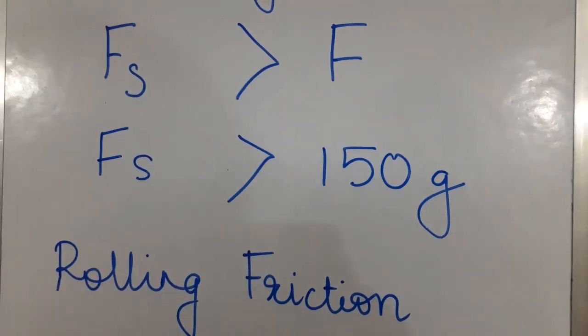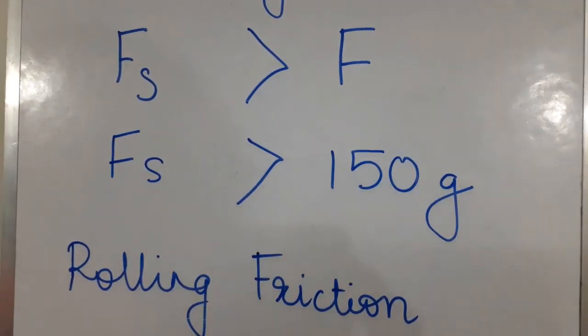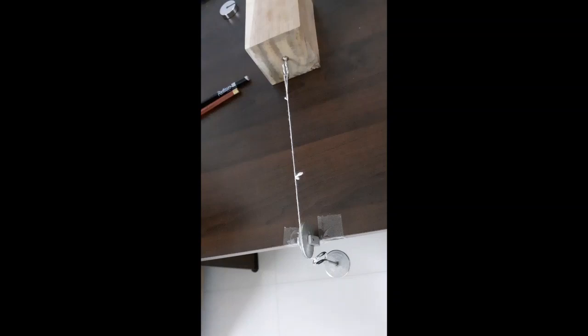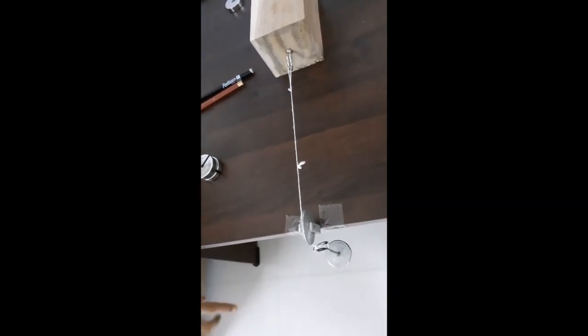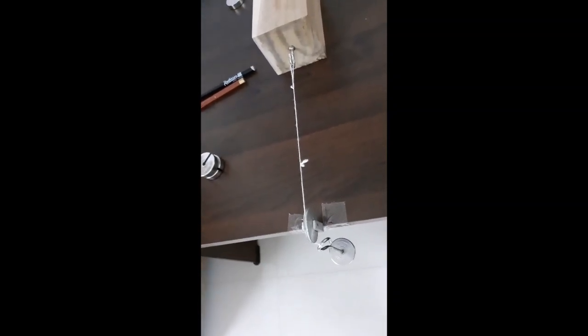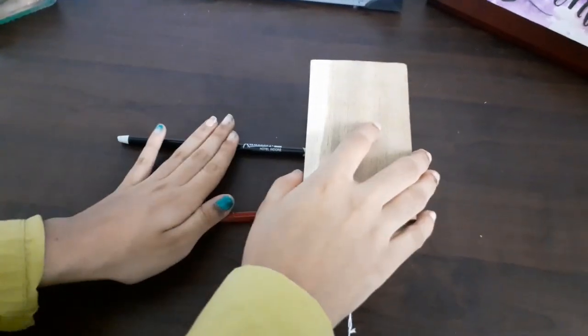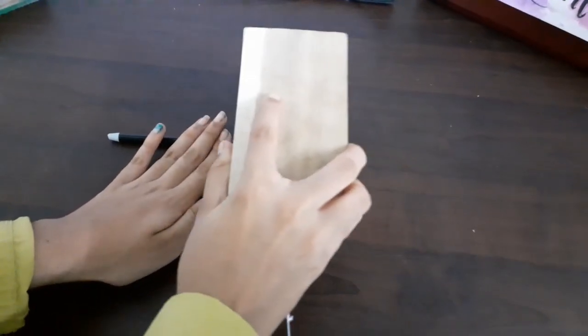Let us move on to the experiment for rolling friction. I am going to use these two pencils. I have also removed the two weights. So now the applied force is only 50 gram. I will place these pencils below the block.